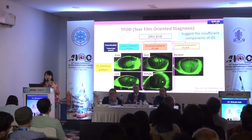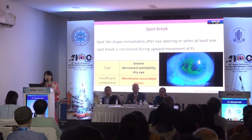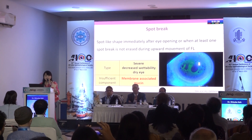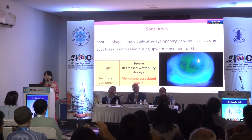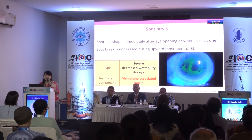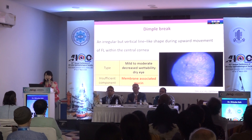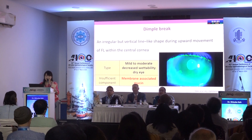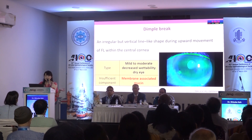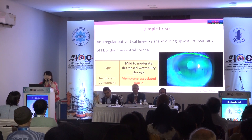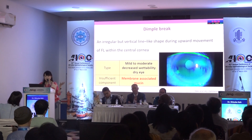Let's move on to decreased wettability dry eye. Spot break — you can see many spots. A spot-like shape appears immediately after eye opening, or when at least one spot break is not erased during upward movement. This is a severe decreased wettability dry eye; the insufficient component is membrane-associated mucin. This is a dimple break — a moderate decreased wettability dry eye. The insufficient component is membrane-associated mucin. You can see an irregular but vertical line-like shape during upward movement within the central cornea. Unlike the spot pattern, right after the blink there is no break-up, but you can see the break during upward movement.